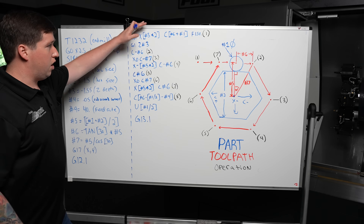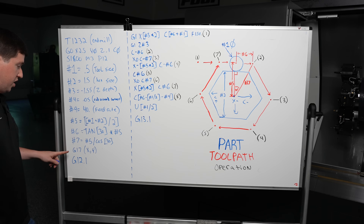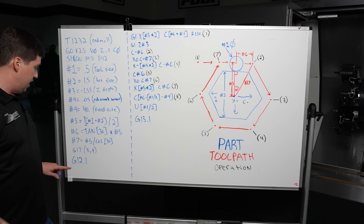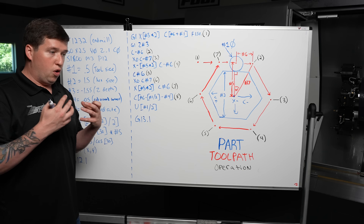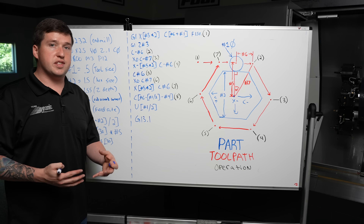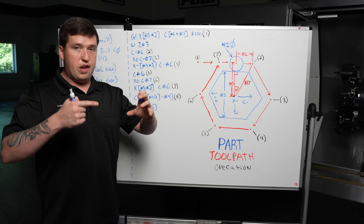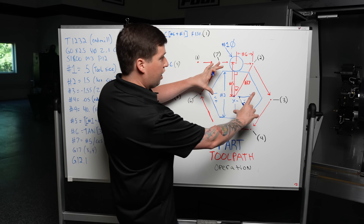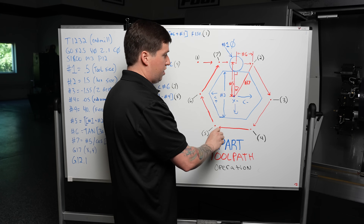Before we go into all these movements of the hexagon, you are going to need to fire a G17 for your XY plane and a G12.1. G12.1 is going to turn normal coordinates into polar coordinates, which means in order to achieve the points of this hexagon, the machine is going to calculate the rotary movements it has to do to achieve these points.